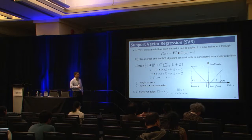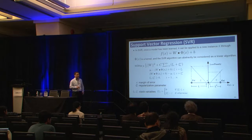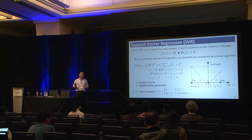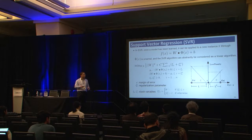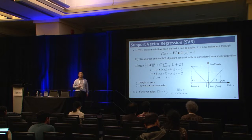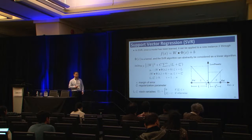In censored regression problems, we have censored instances with only partially informative information, so the symmetric loss function is no longer suitable. We must modify the loss function to enable support vector regression to encode the information of censored instances.